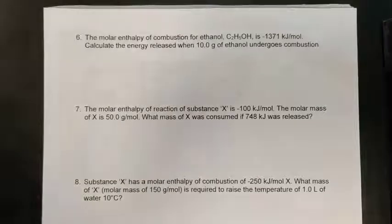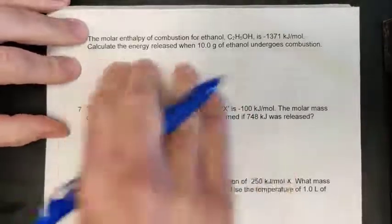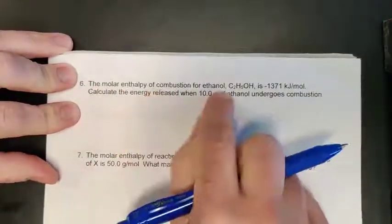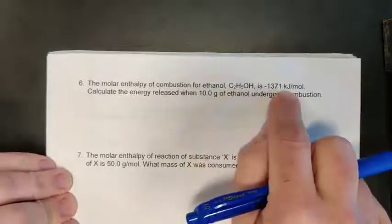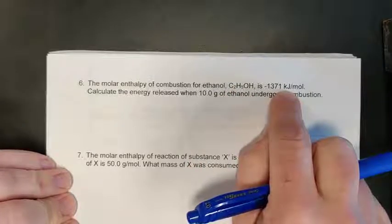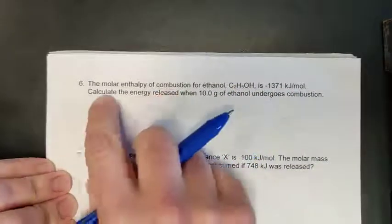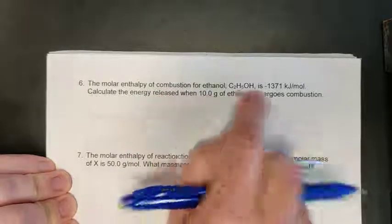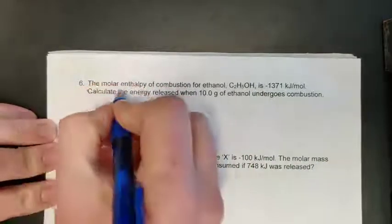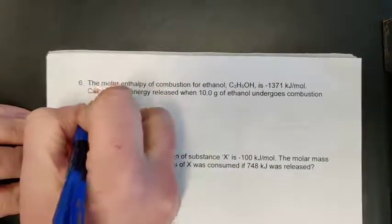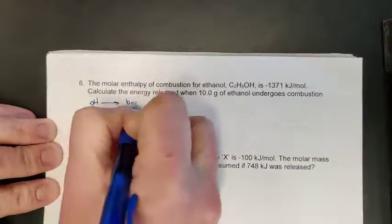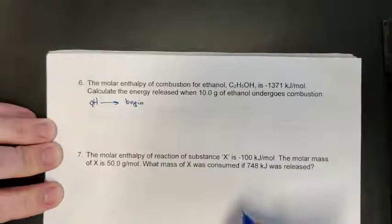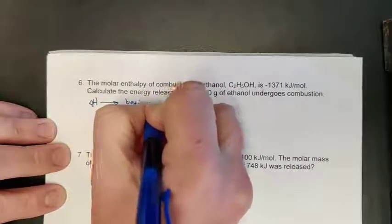Example six: the molar enthalpy of combustion for ethanol (C₂H₅OH) is negative 1371 kJ/mol. Calculate the energy released when 10 grams of ethanol undergoes combustion. We're looking for energy released — that's a delta H — and since it's a combustion energy, this falls in the green box.